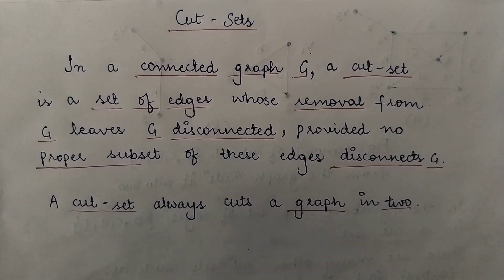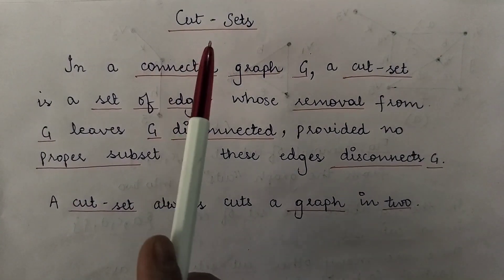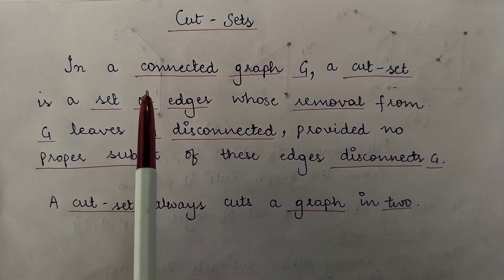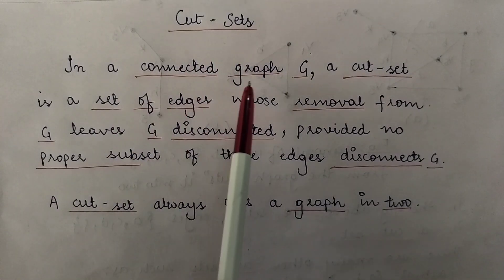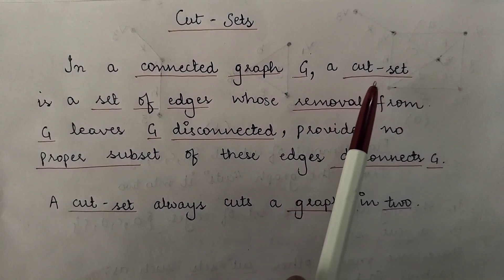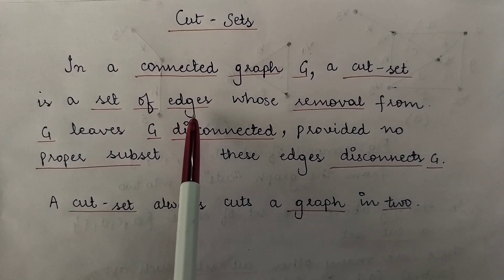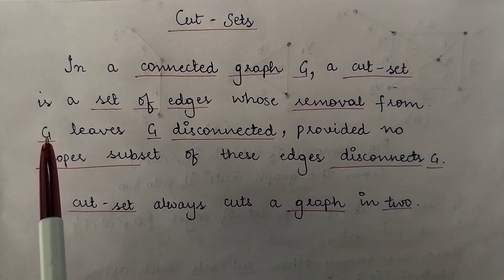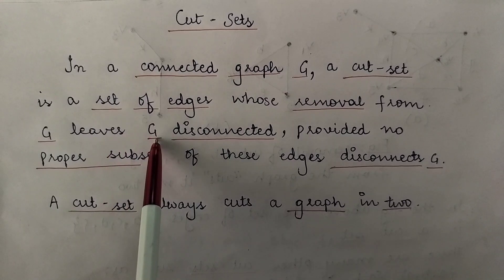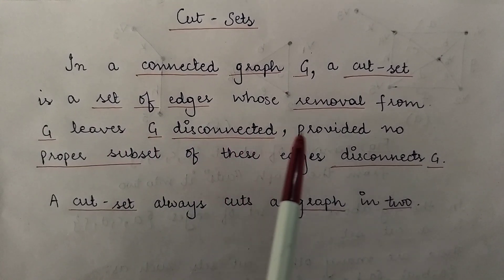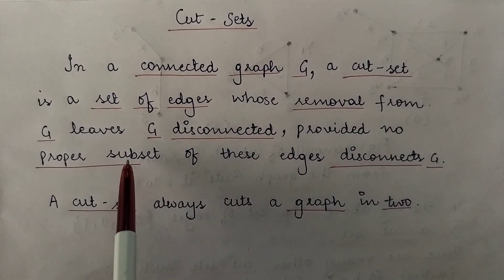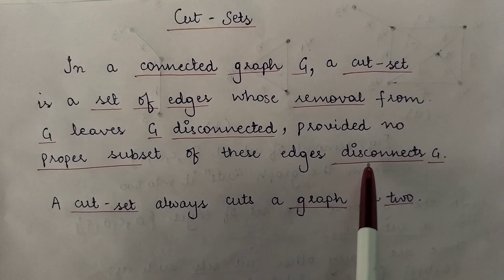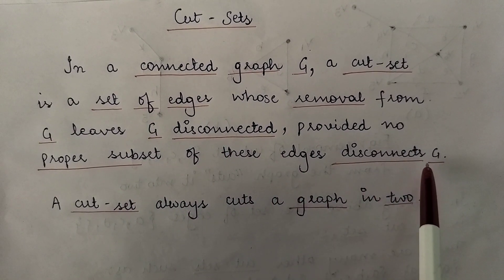Hi everyone, today we are going to study cut sets in graph theory. In a connected graph G, a cut set is a set of edges whose removal from the graph G leaves the graph G disconnected, provided no proper subset of these edges disconnects the graph G.